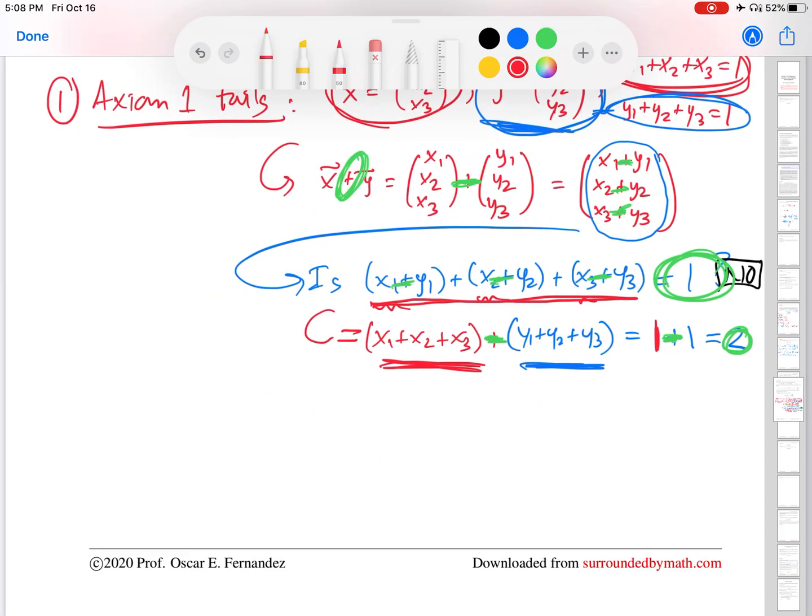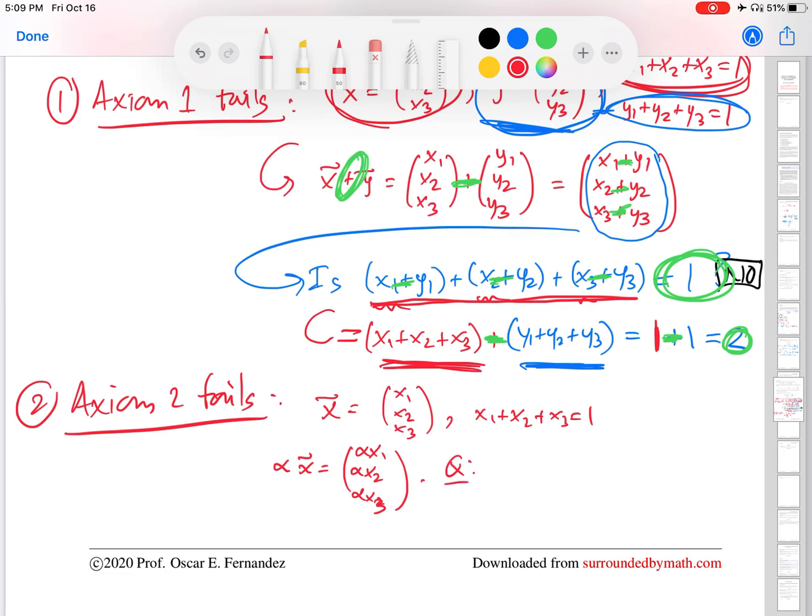Let me show you the second axiom failing. So axiom two fails. How do we see that? Take my vector x one more time, satisfying the sum of its components being one. Take a real number alpha and multiply times the vector x. By our definitions, every component gets multiplied by alpha. Question: is it true that the sum of the components of this new vector equal to one? This equals alpha times x1 plus x2 plus x3, which equals alpha times one, which gives me alpha.